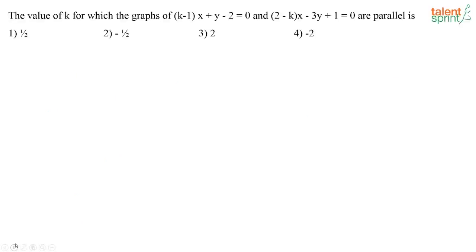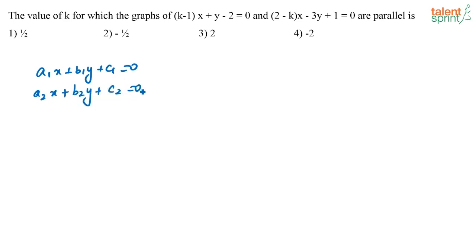The value of K for which the graphs of K minus 1 into X plus Y minus 2 equal to 0, and 2 minus K into X minus 3Y plus 1 equal to 0, are parallel. If two lines A1X plus B1Y plus C1 equals 0 and A2X plus B2Y plus C2 equals 0 are parallel, then A1 by A2 equals B1 by B2 and this is not equal to C1 by C2.